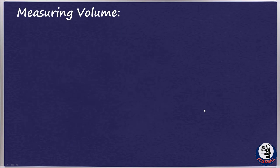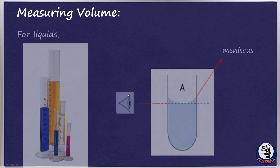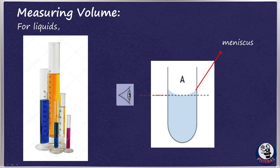Now, how can we measure volume? For liquids, measuring cylinders can be used. To perform an accurate reading, you must look at the scale horizontally and read the level of the bottom of the meniscus.